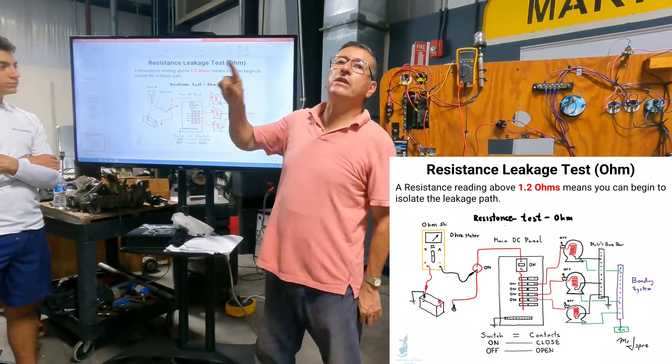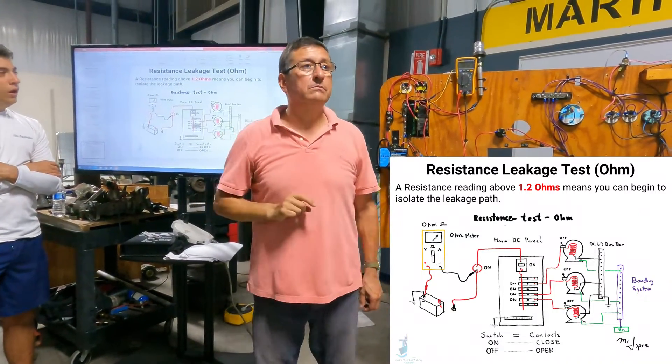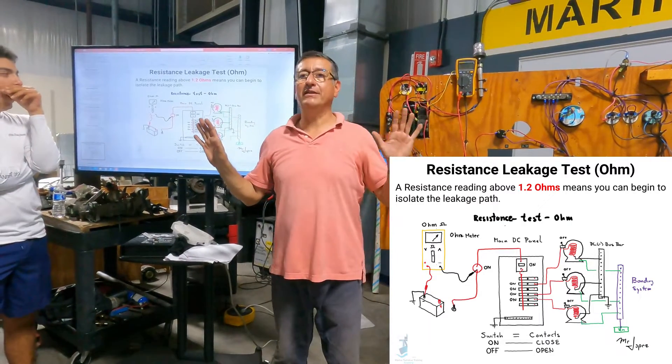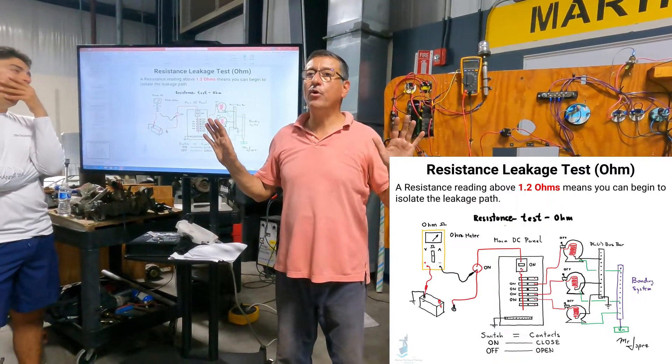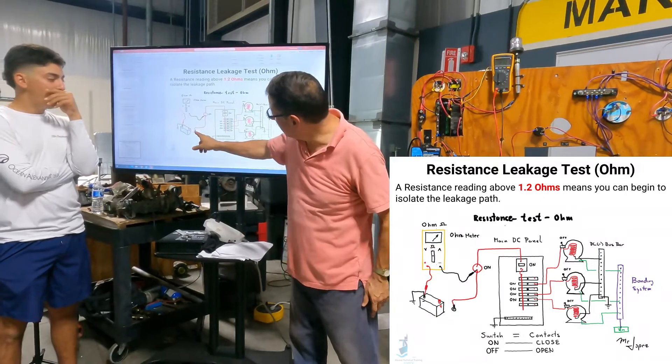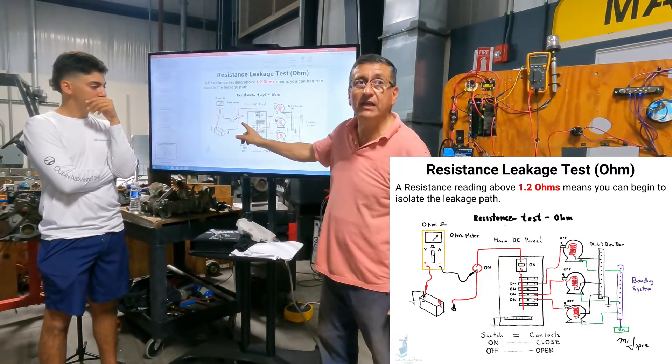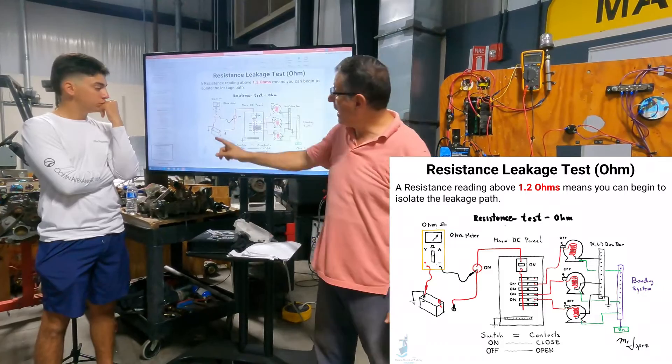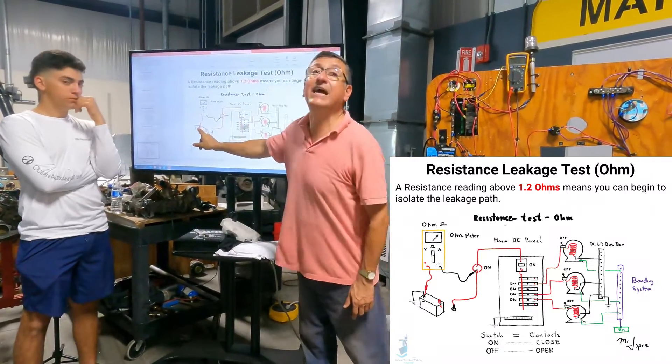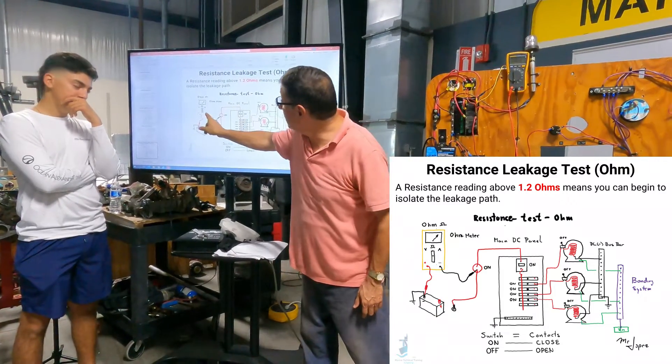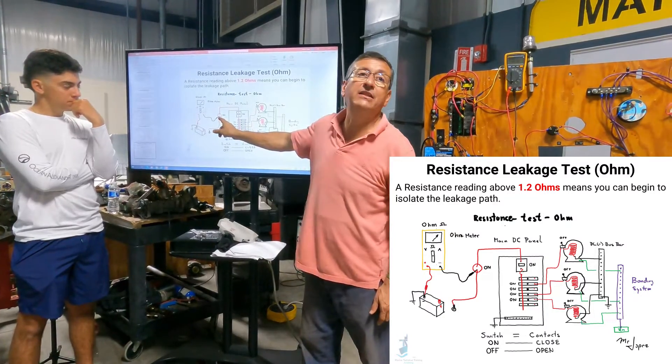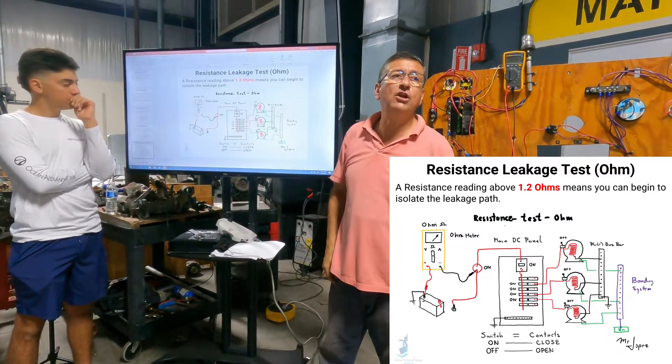If the reading is more than 1.2 ohms, it's contaminated. 1.2 ohms. And this is the connection. I disconnect the positive of the battery, I put my multimeter in ohms, and I connect the red one into the negative terminal of the battery, and the black one into the cable that I disconnected.